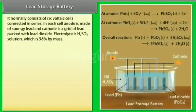It normally consists of six voltaic cells connected in series. In each cell, anode is made of spongy lead and cathode is a grid of lead packed with lead dioxide. Electrolyte is H2SO4 solution which is 38% by mass.